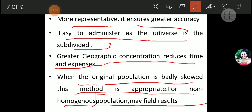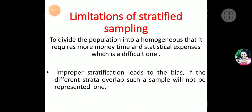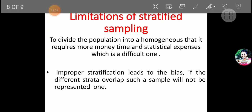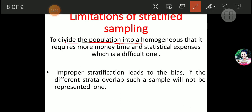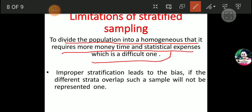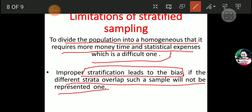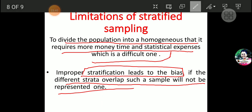Now the limitations. To divide the population into homogenous groups requires more money — so it is economically costly. Also, improper stratification leads to bias. So there could be a problem of bias due to improper strata formation. These are the two limitations of stratified random sampling.